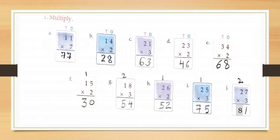Now I part: twenty five multiply by three. First multiply the ones by three — that is five into three is fifteen. Write five under ones and carry one ten. Now multiply the tens by three — that is two into three is six. Add one carry, so six plus one is seven. Write seven under tens. So your answer will be seventy five.